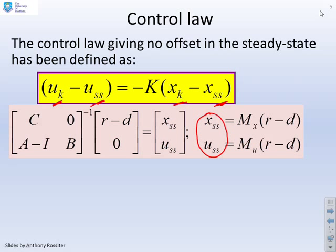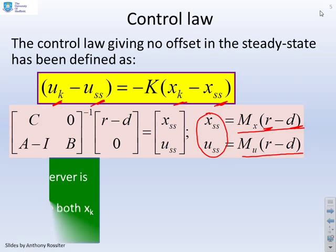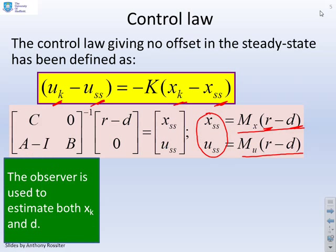and we've done this in earlier videos, give some explicit expressions for XSS and USS based upon the target R, and the disturbance estimate D.